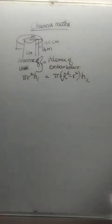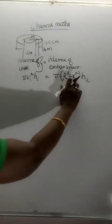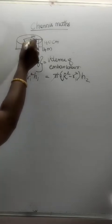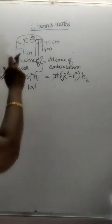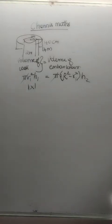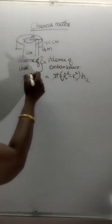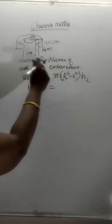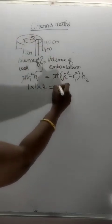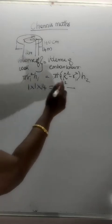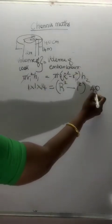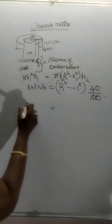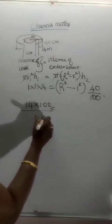The height is different. Pi cancels. R1 is equal to 1. The diameter is 2 meters, so the radius is 1 meter. Into H is 14 meters. This is equal to capital R squared. The height of the embankment is 40 centimeters, which is equal to 40 by 100 meters.